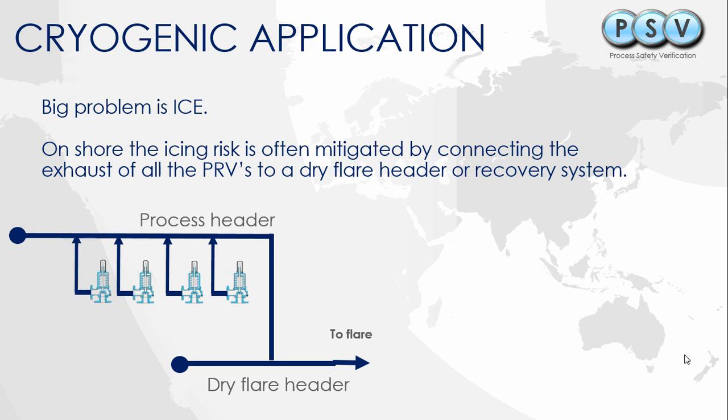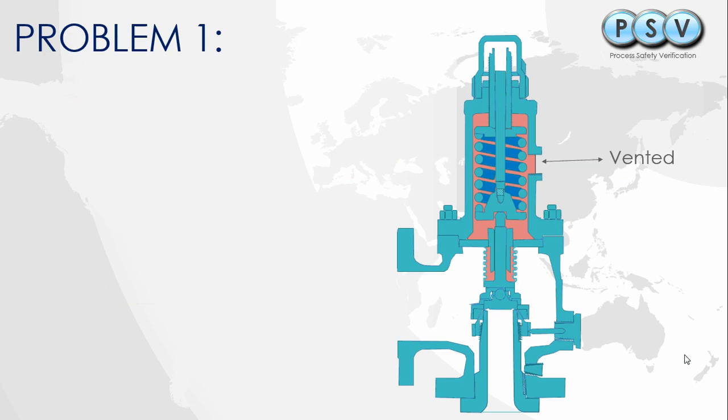Here's a drawing of a balanced bellows valve. You can see there are two separate areas: the exhaust system, which is the downstream side of the valve going out here, and in the pink shaded area we have the bellows side of the valve.